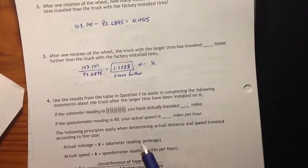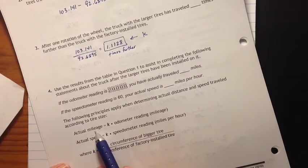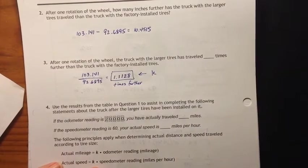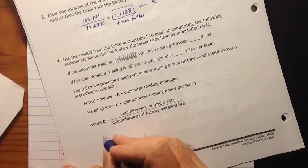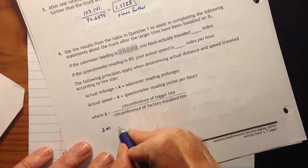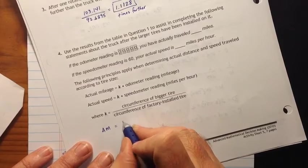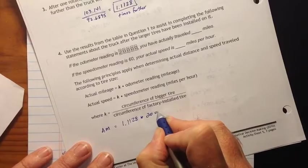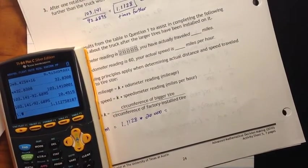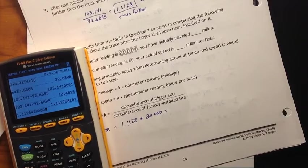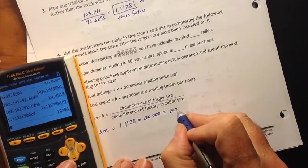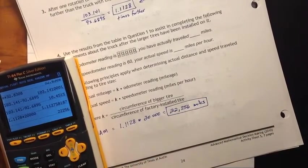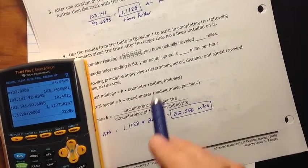All right. And K is going to be really nice because what we're going to do is to find the actual mileage, we're going to take K times the odometer reading. The odometer reading is set to the factory installed tire. So once we put the bigger tires on, it's going to get off. All right. So our actual mileage here, actual mileage AM, equals K times the odometer reading, 1.1128 times 20,000. So when I do that, 1.1128 times 20,000, I get 22,256 miles. All right. So we've gone a little over 2,000 miles further than the odometer is actually reading.